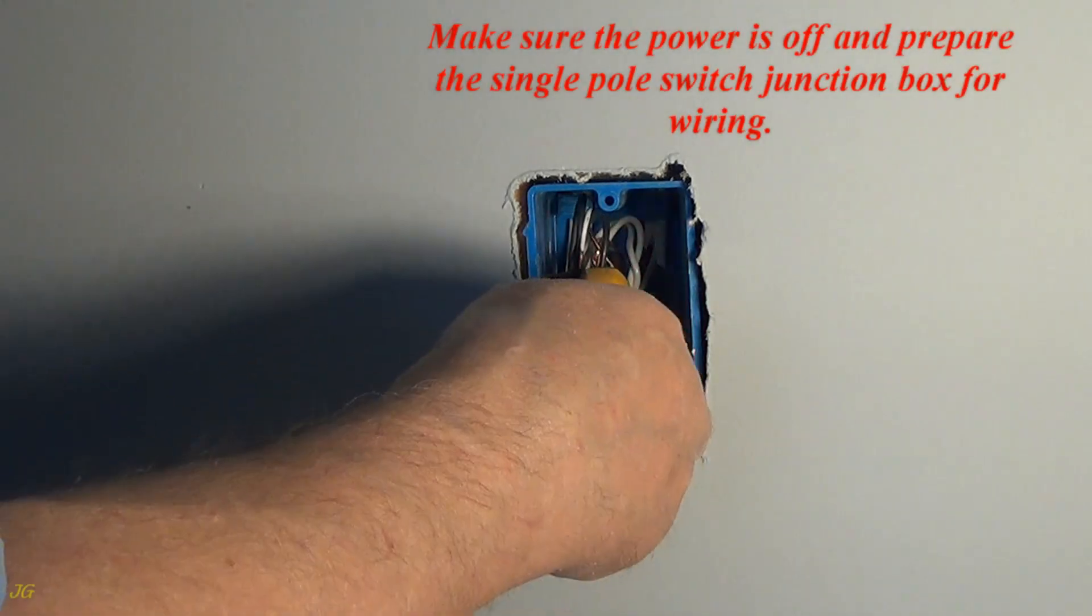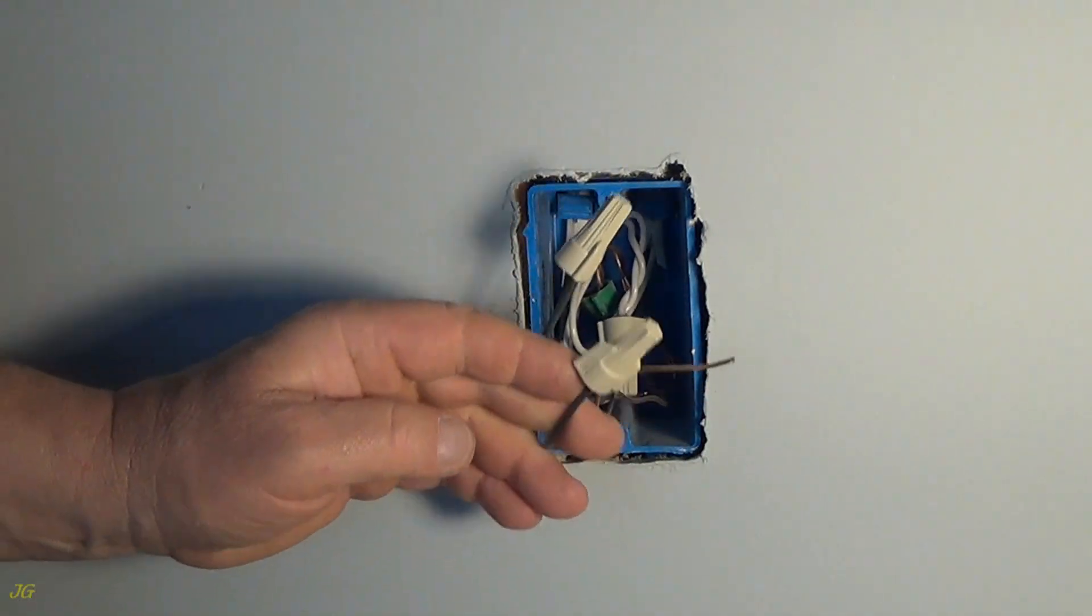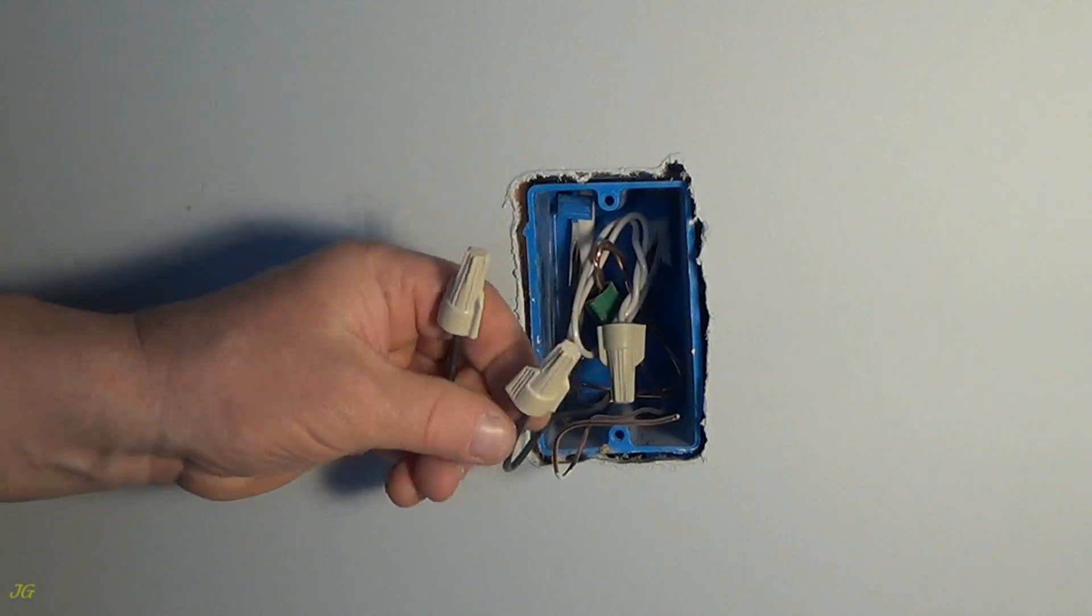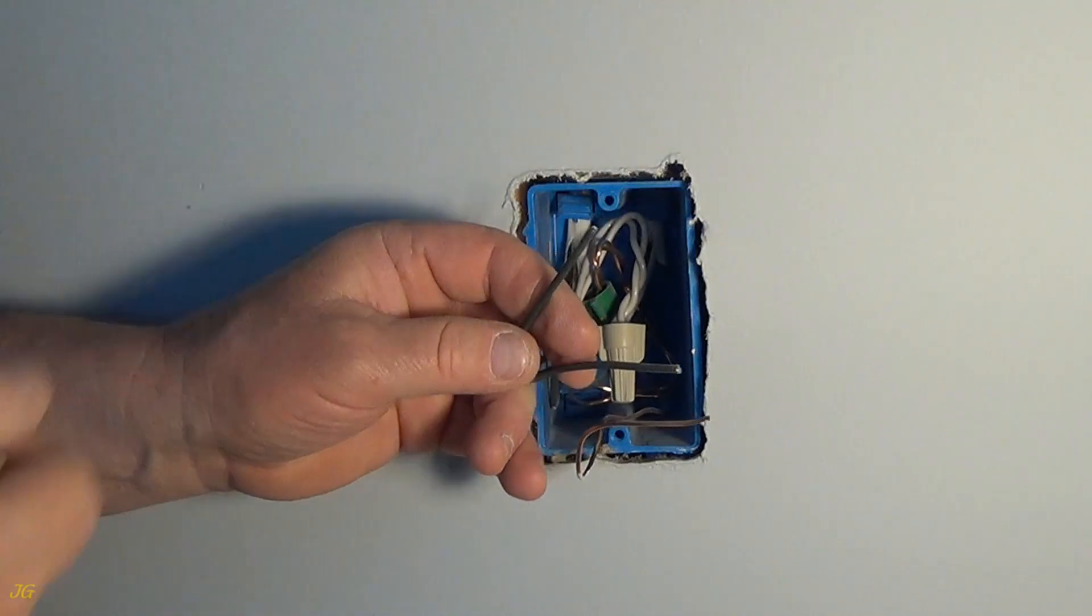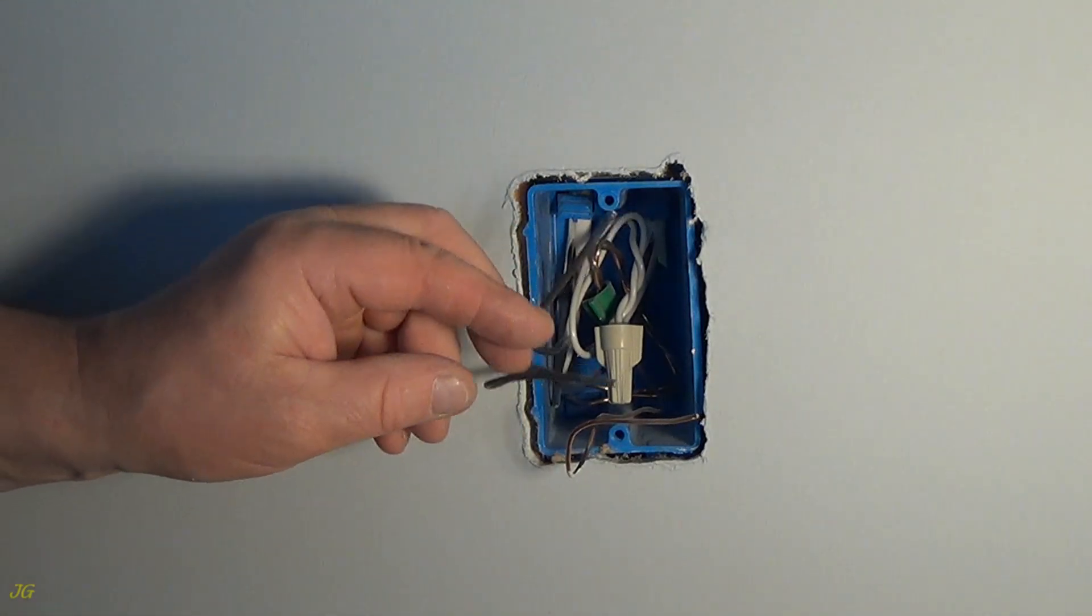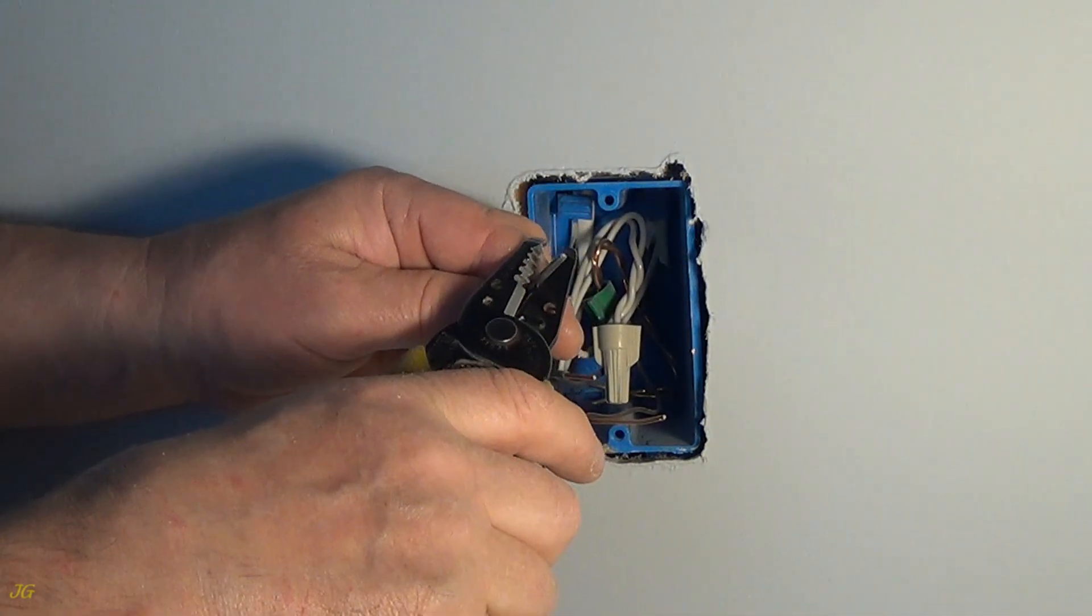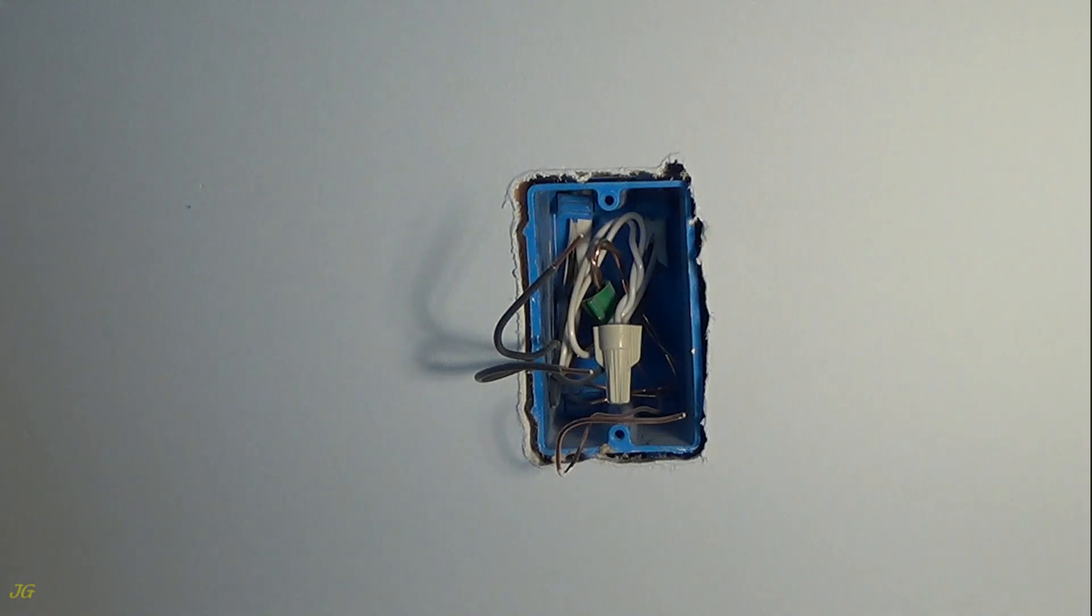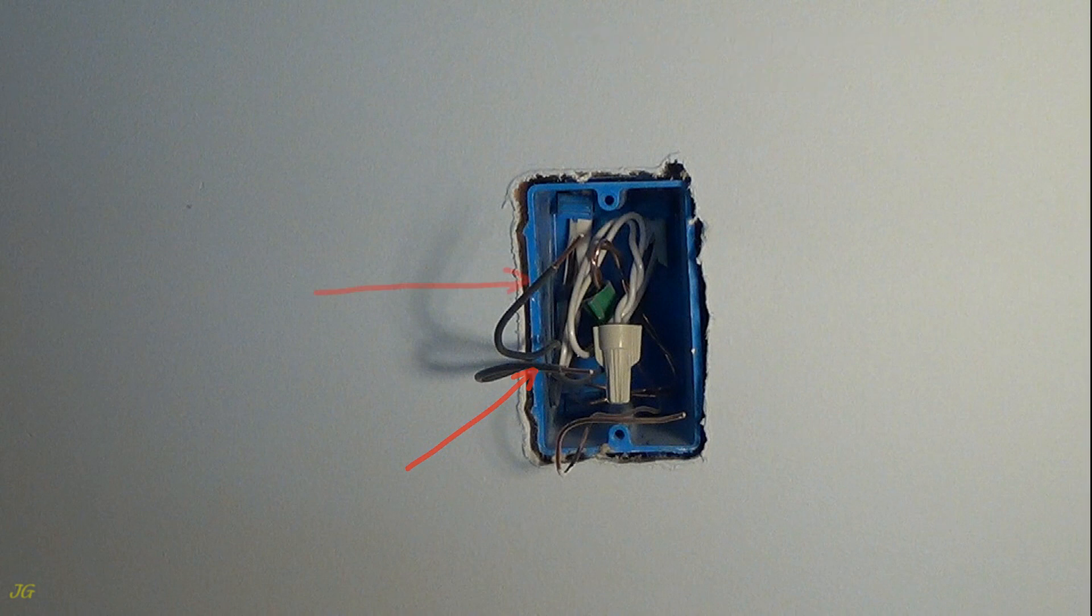Make sure the power is off and prepare the single pole switch junction box for wiring. Single pole switch junction box wires: ground wire (bare), line wire from power source (black), and load wire to the light fixture (black).